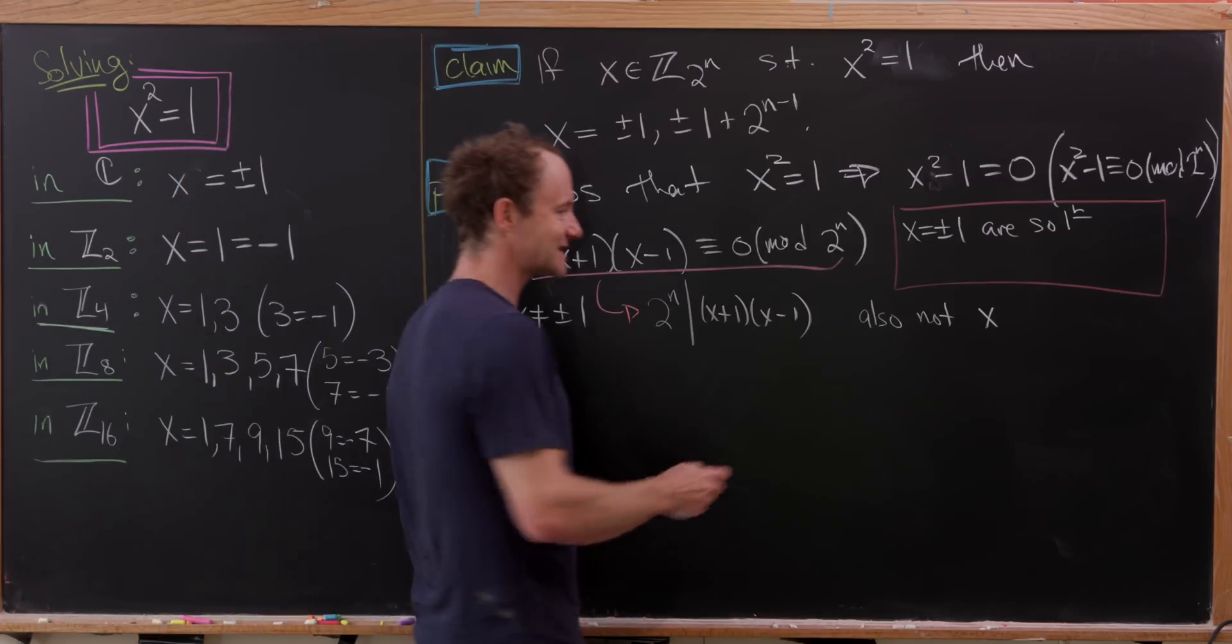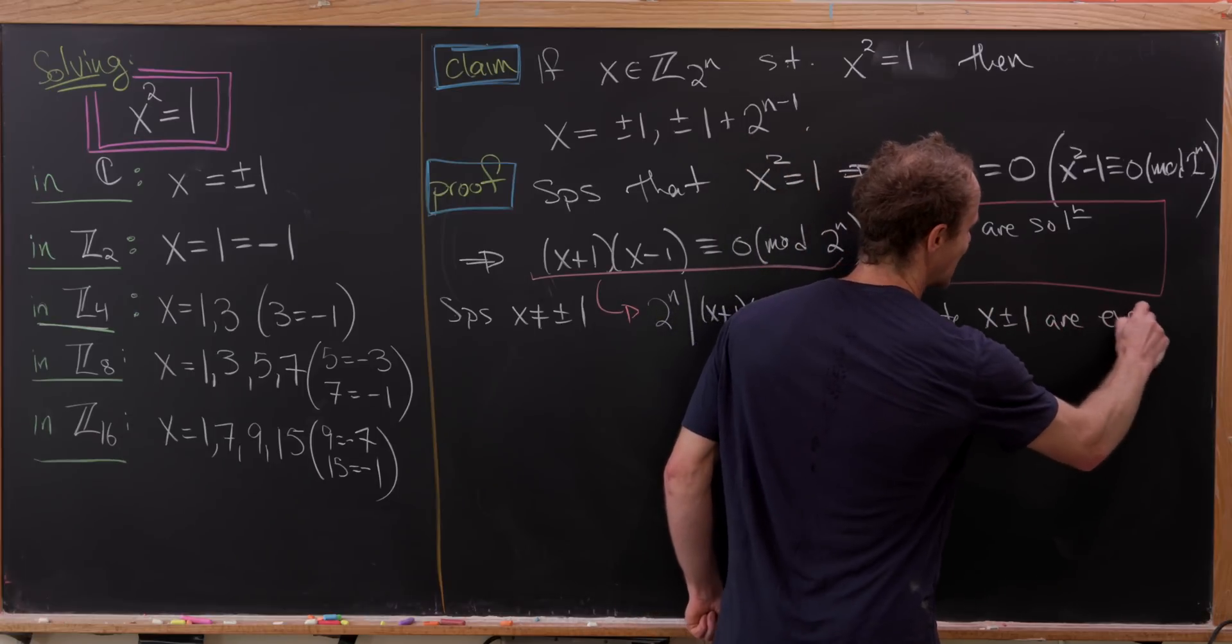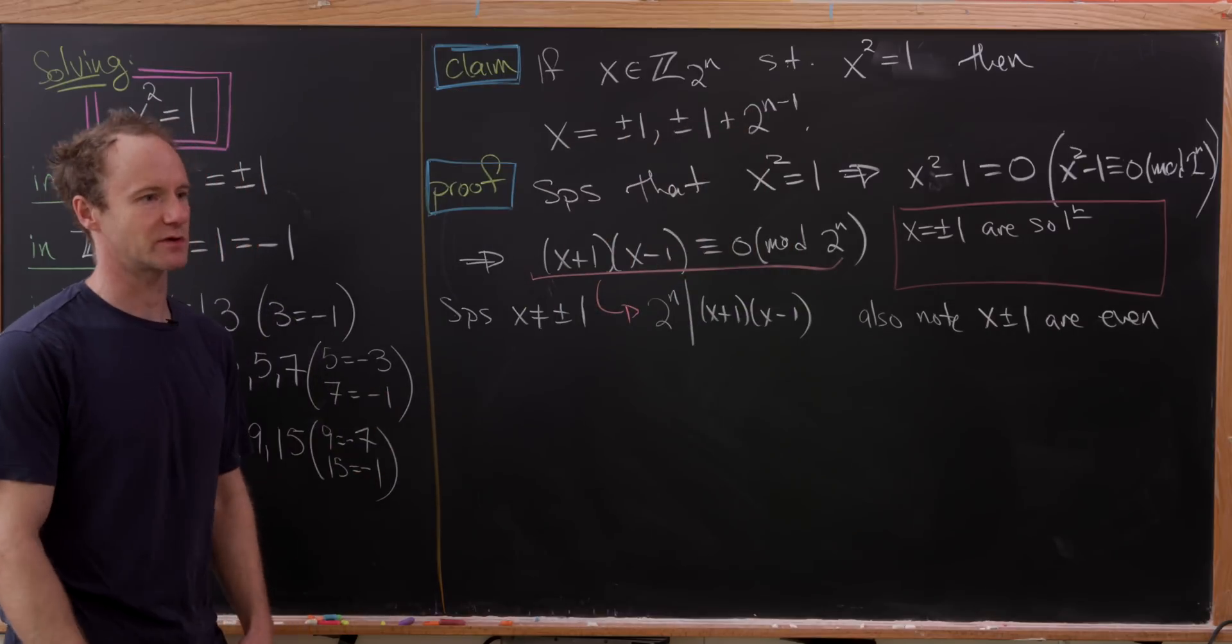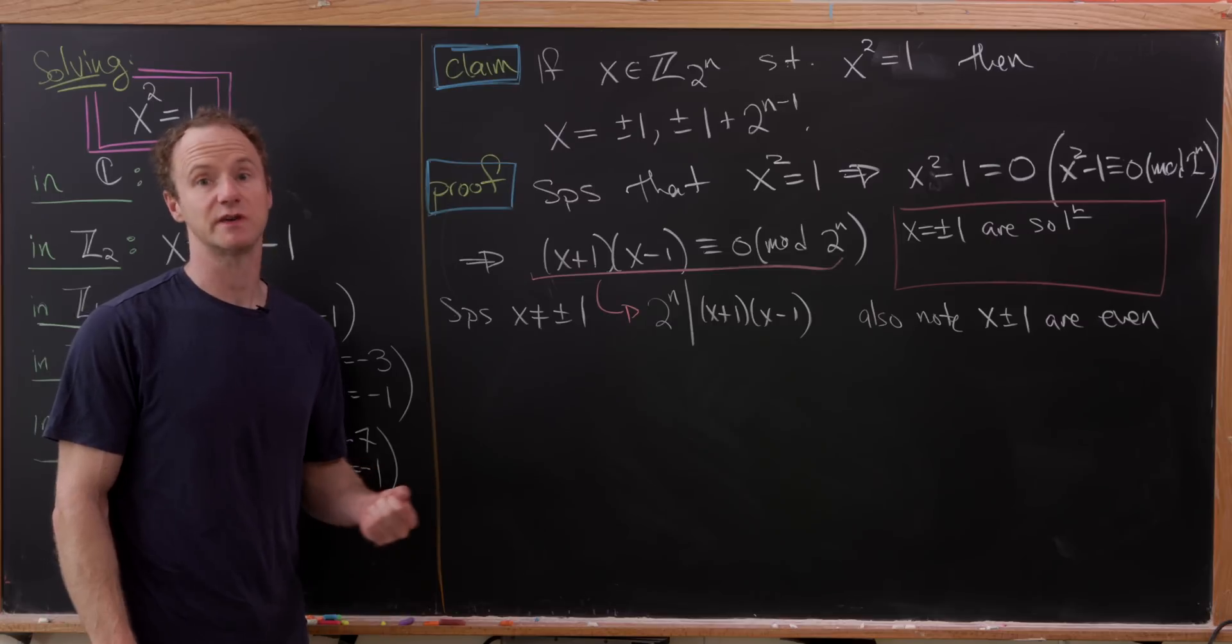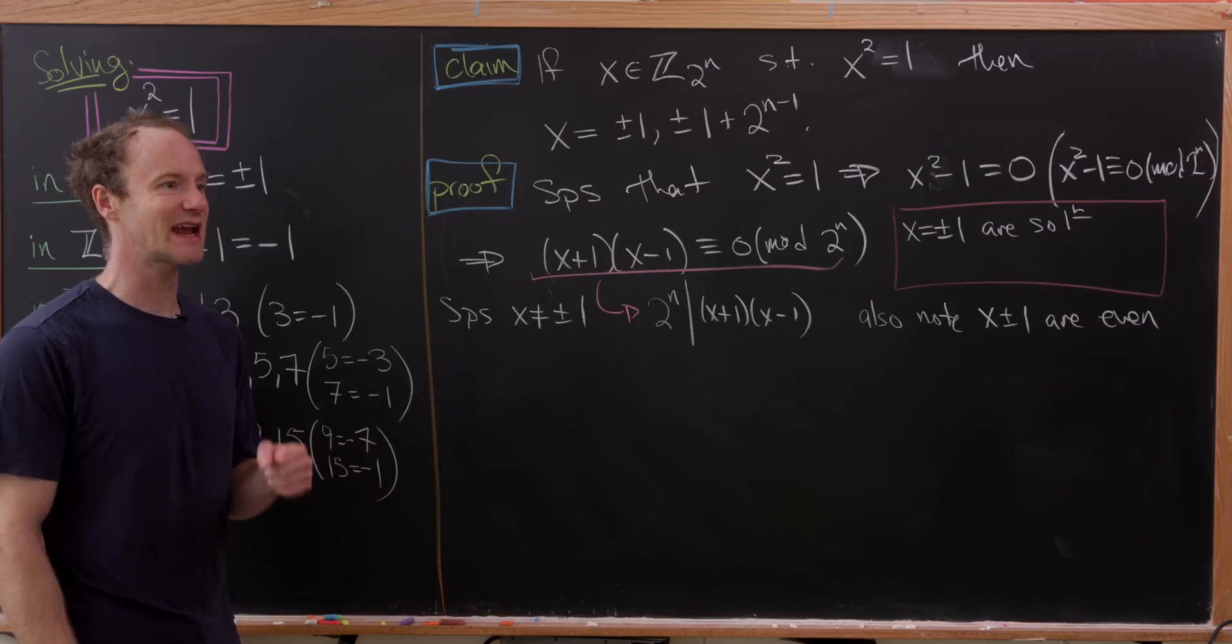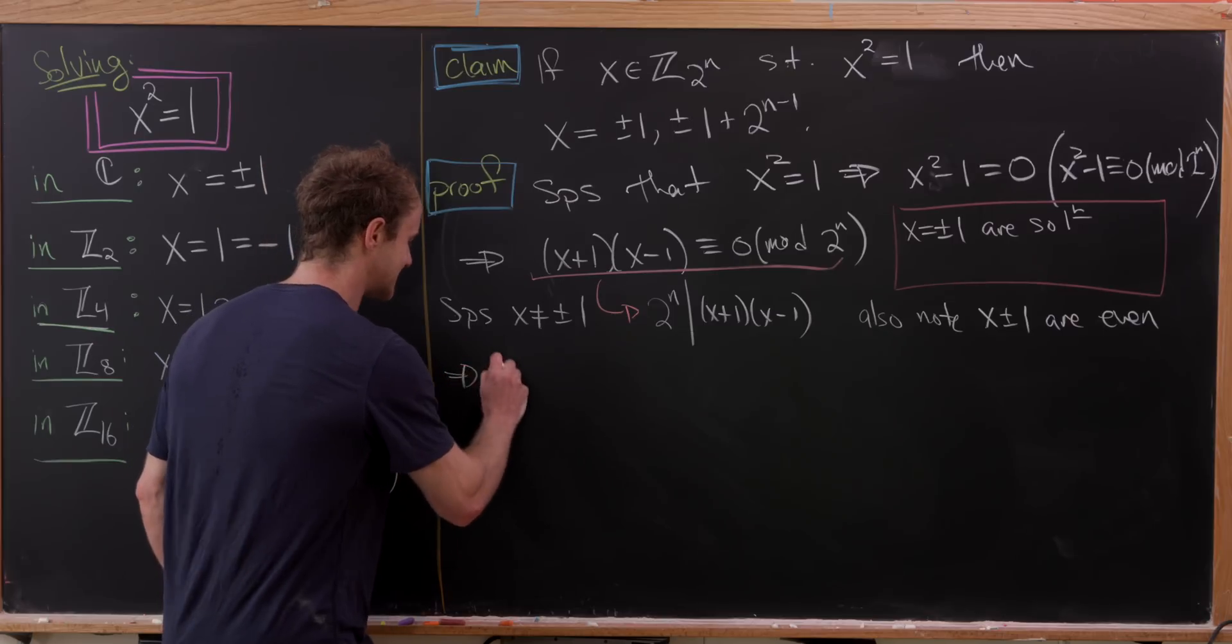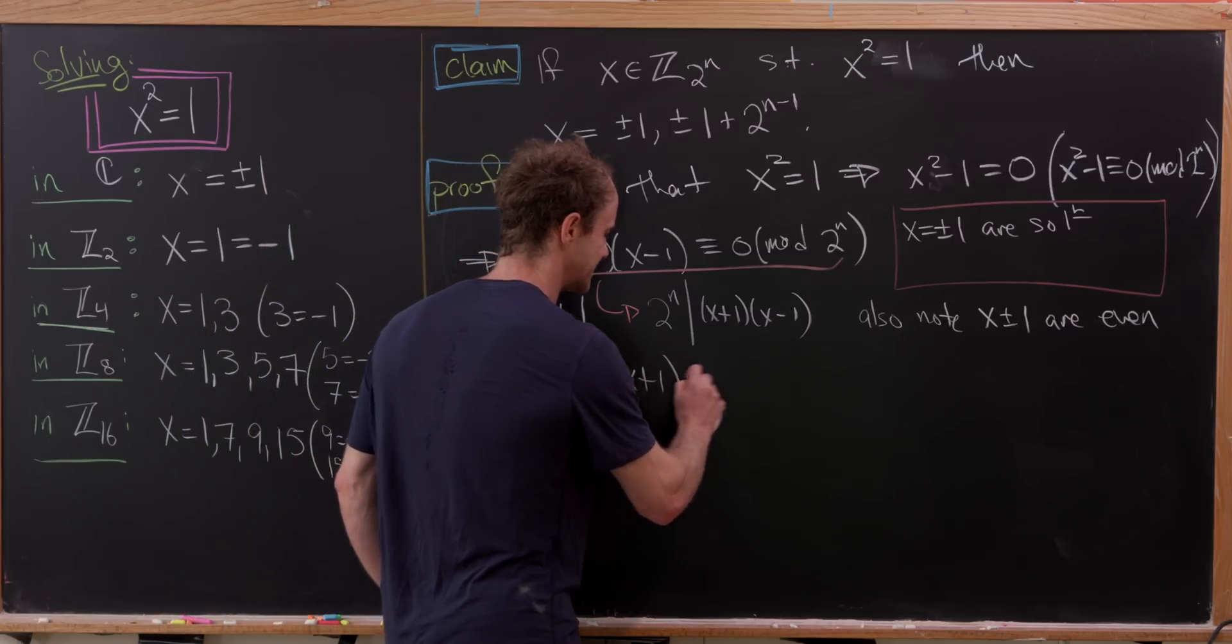But if x is an odd number, then that means that x±1 are both even numbers. But that means we've got consecutive even numbers like 2 and 4, 4 and 6, 122 and 124. And it can easily be shown that consecutive even numbers have a gcd of 2. So that means that the gcd of these two things, x-1 and x+1, is equal to 2.